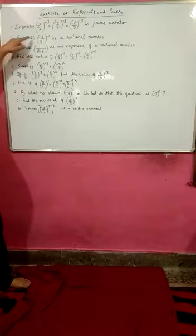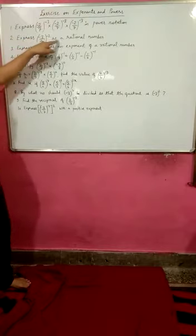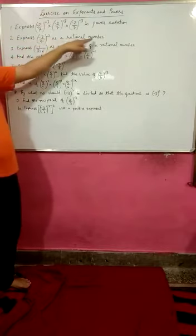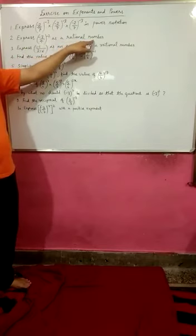Moving on to the next question: express (-3/4)^-2 as a rational number.